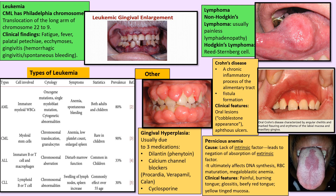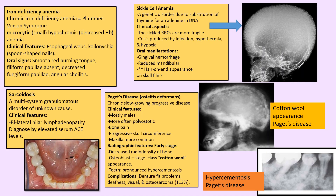Iron deficiency anemia: the Plummer-Vinson syndrome is important — it is chronic iron deficiency anemia with dysphagia in females due to esophageal webbing. Oral signs include smooth red burning tongue, filiform papillae absent, and angular cheilitis.